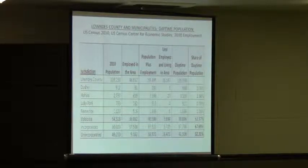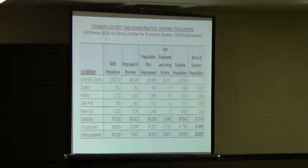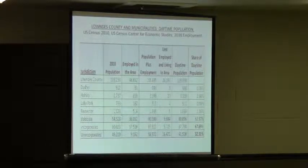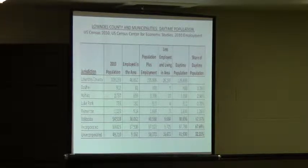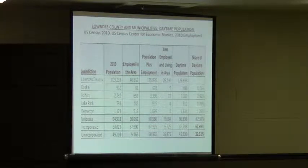When you look at the individual columns, you take the population that's there at night, subtract out the people that leave, and add in the people that come in, and then you arrive at a daytime population. As expected, the urban centers of the community grow after the morning commute. The major communities shrink, while the places where the employment centers are see a gain in population.